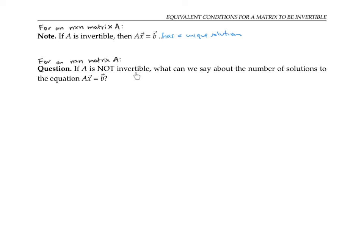But what about if A is not invertible? What can we say about the number of solutions to the equation Ax equals b in that case? Well, we know for sure that this equation does not have one unique solution. Since if it did, the same sort of argument we used before would say that A would reduce to the identity matrix and A would be invertible.